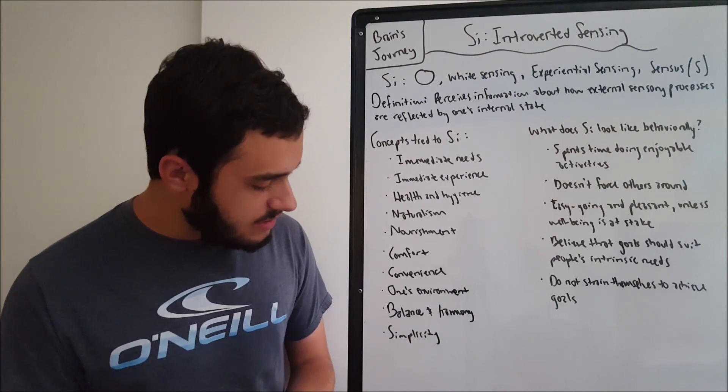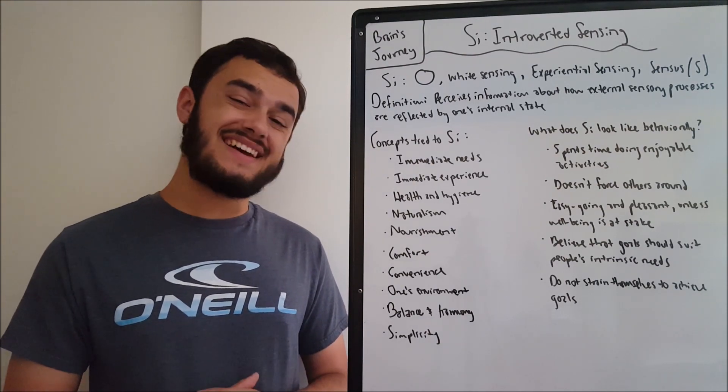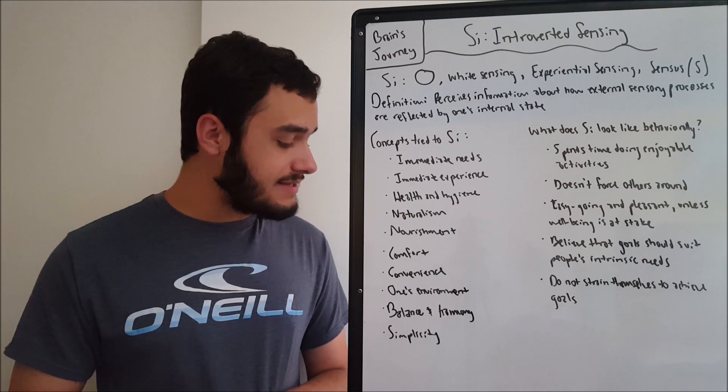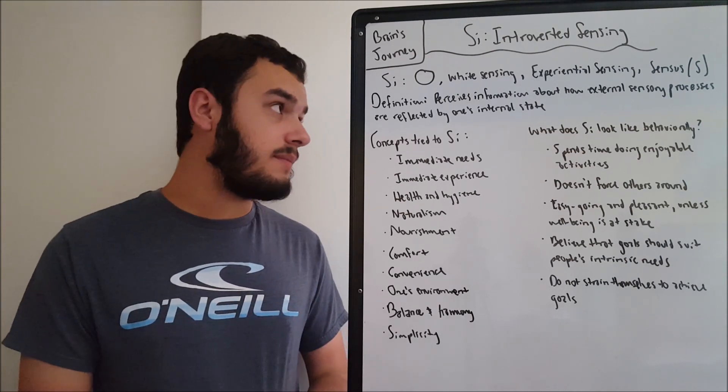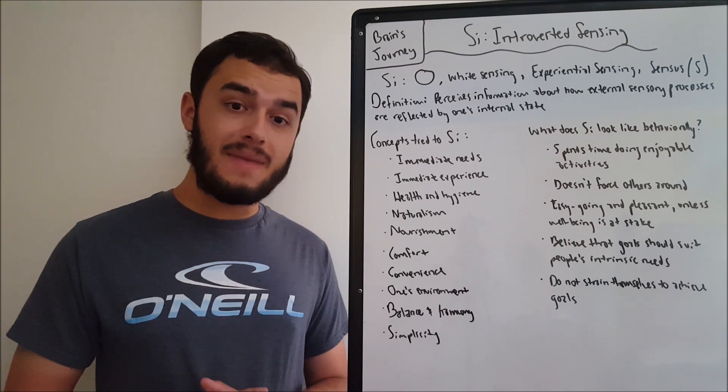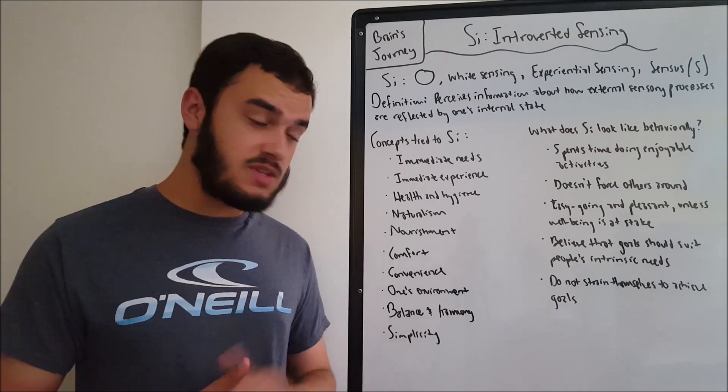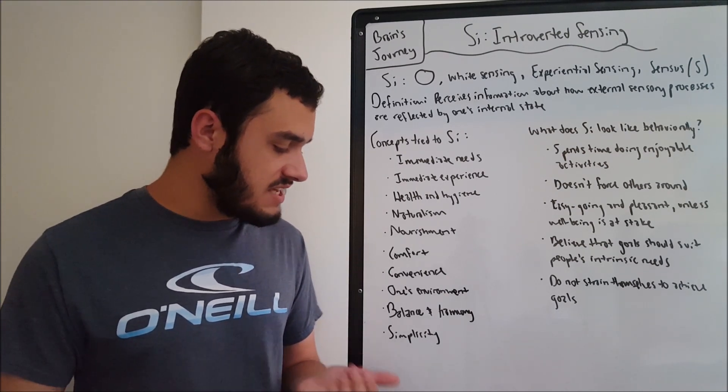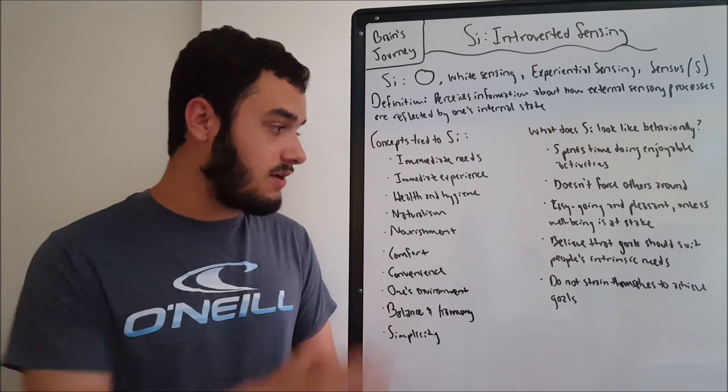And then the last thing that I wanted to focus on is simplicity. SI is not overcomplex. It likes to keep things to a down low in its environment. SI is related to the simplest possible method of achieving things. Maybe with all these things, these concepts that we've covered, SI would seek the most efficient simplicity in all of these things.